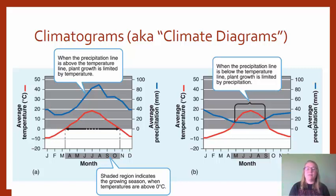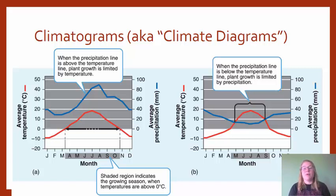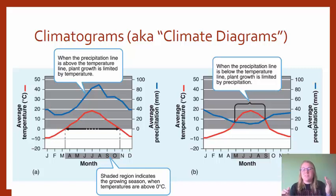On these climatograms you'll notice shaded months across the bottom. Those shaded areas indicate the growing season — the time during the year when the temperature is above freezing. These are all in degrees Celsius, so zero means you're at the freezing point. You can also tell if temperature or precipitation is limiting plant growth. If it's really cold but moist there's no plant growth; if it's warm but dry there's not much growth either. Most plant growth occurs when both temperature and precipitation are high.